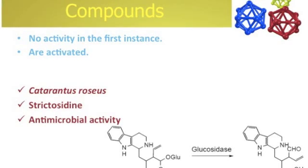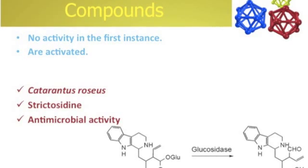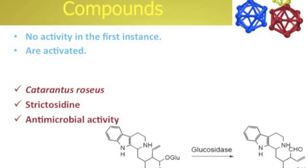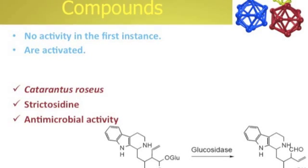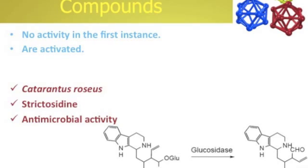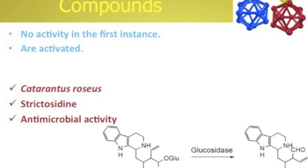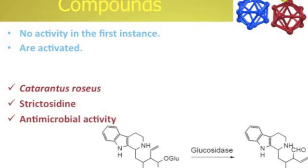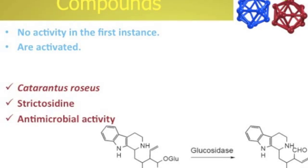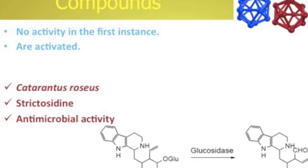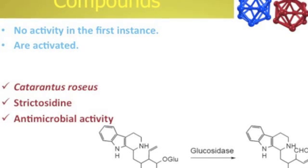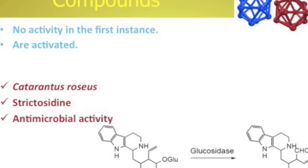The second type of defense compounds is the biochemically activated compounds. These are substances that need a previous activation process to pass from an inactive form to an active form. These molecules are activated by a biochemical reaction using enzymes, which are a kind of protein. An example is Catharanthus roseus, which has a molecule named strictosidine. This substance has antimicrobial activity when the molecule undergoes a modification process via glucosidase enzymes.